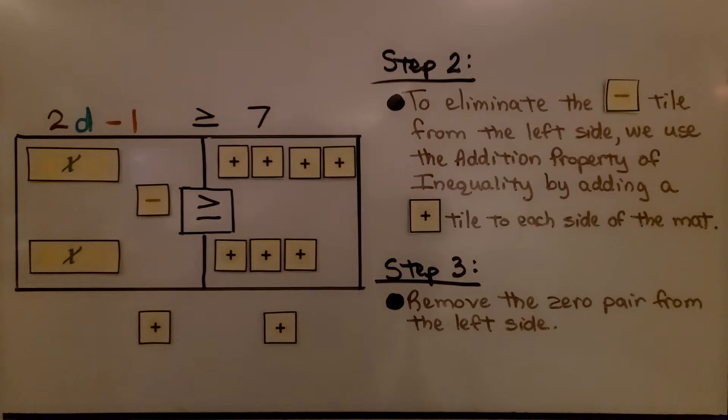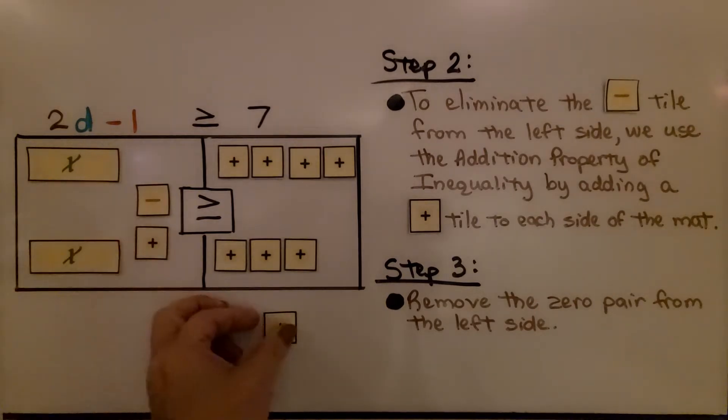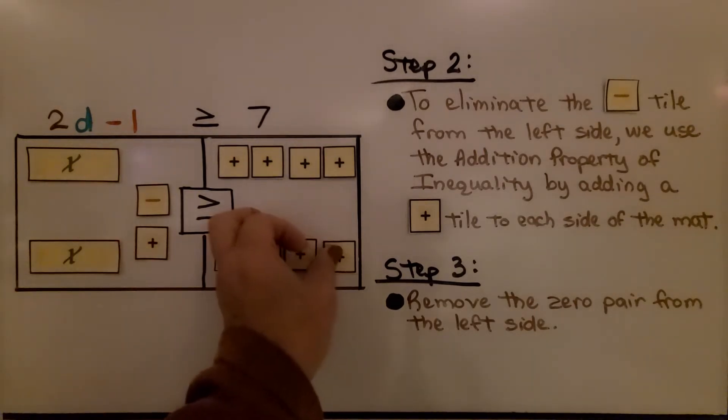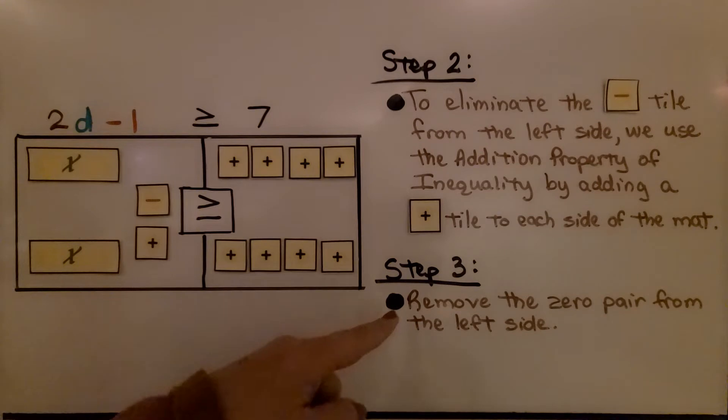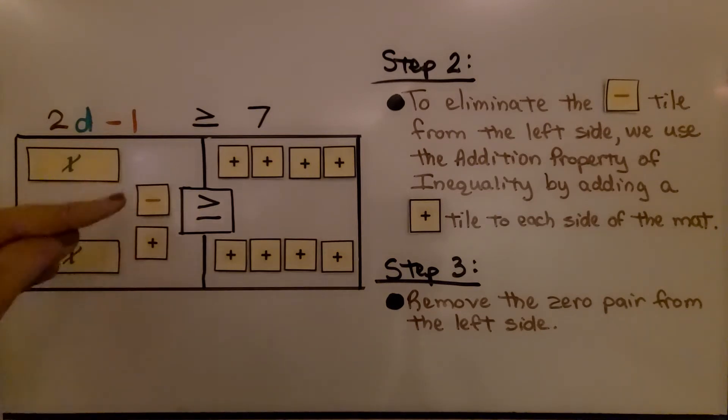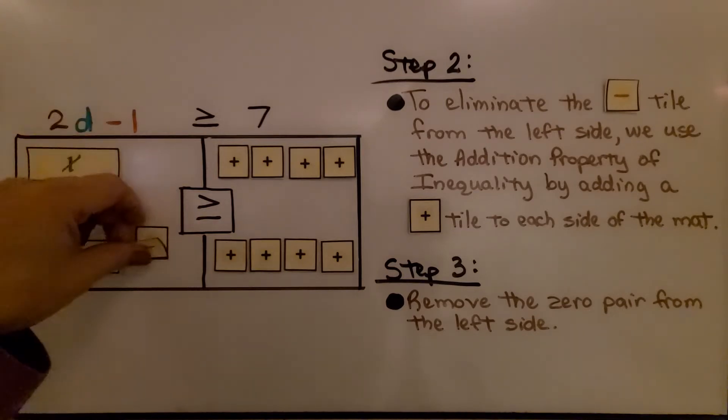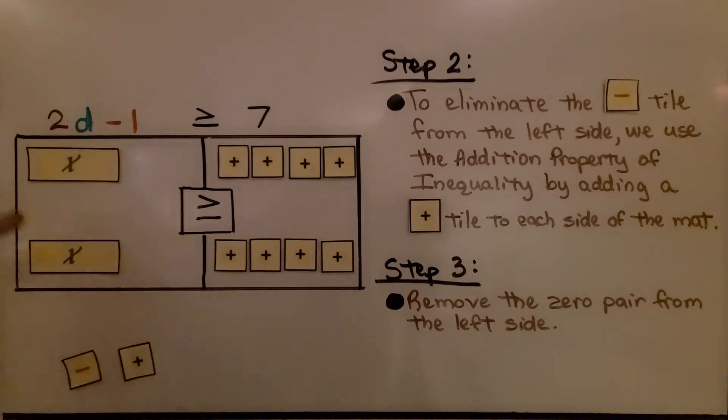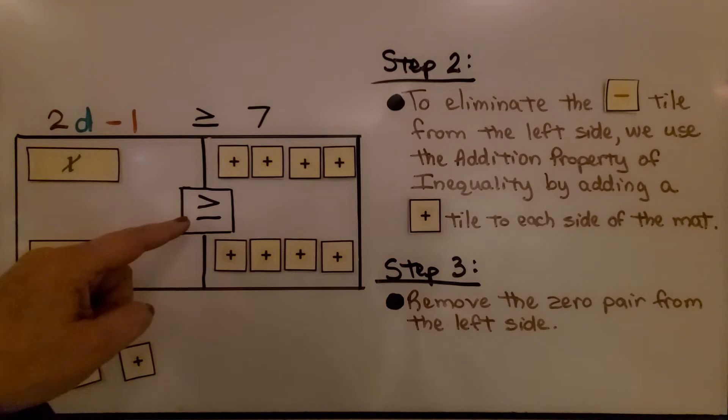For step two, we eliminate this minus one tile from the left side. We use the addition property of inequality by adding a plus tile to each side of the mat. Now, step three, we remove this zero pair from the left side. Remember, a zero pair is when we have a minus one and a plus one. They cancel each other out because they equal zero, so now we have 2d is greater than or equal to eight.